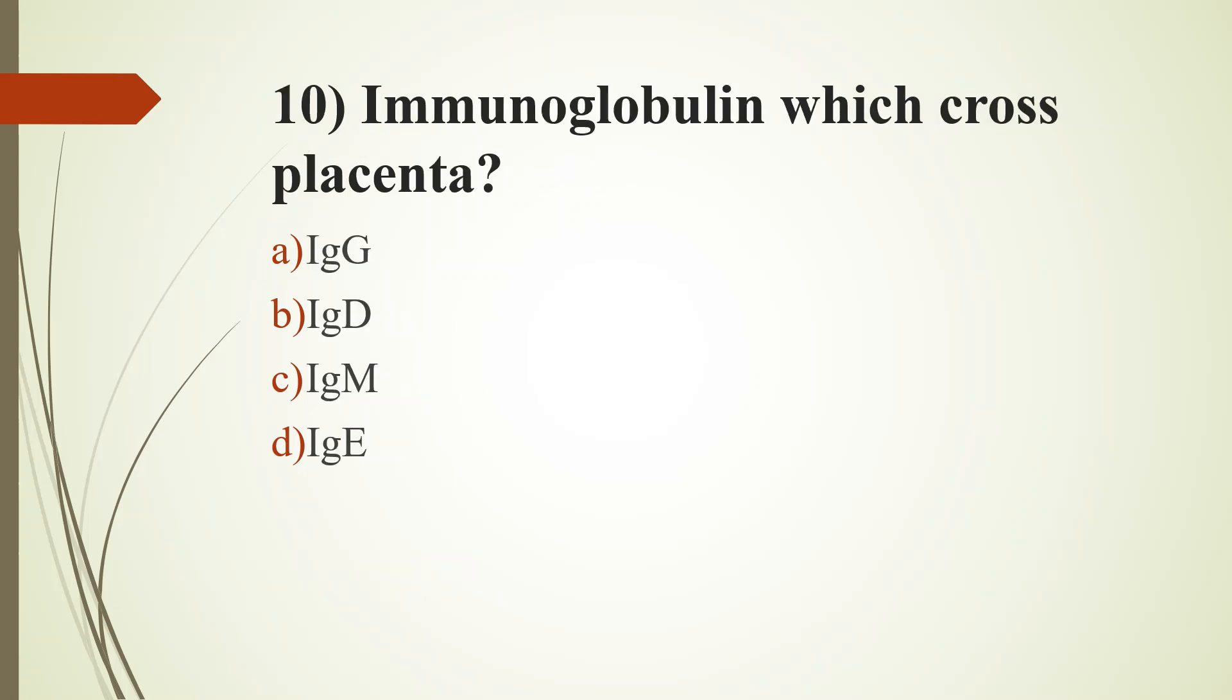Tenth question, immunoglobulin which cross placenta: option A, IgG; option B, IgD; option C, IgM; option D, IgE. Answer is option A, IgG. MLT, medical laboratory technology, important multiple choice questions, our channel has already discussed it.